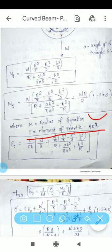The radius of gyration is defined as the distance from the axis of rotation to a point where the total mass of the body is supposed to be concentrated.